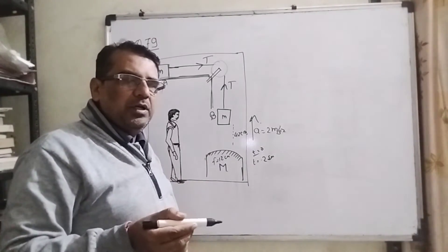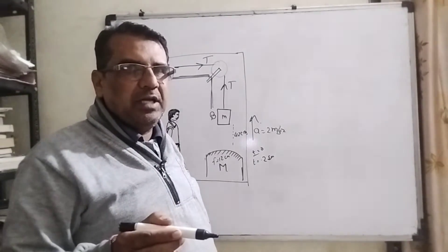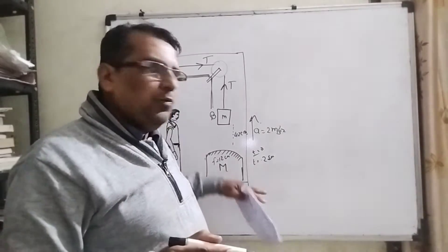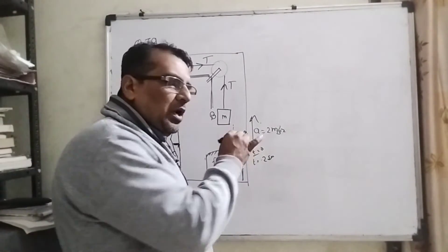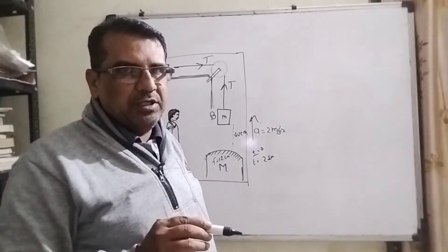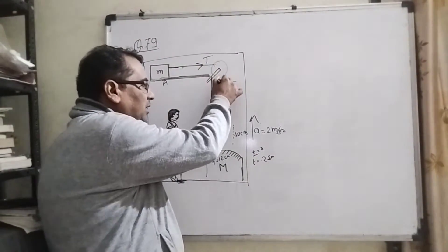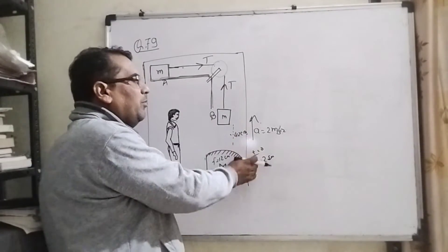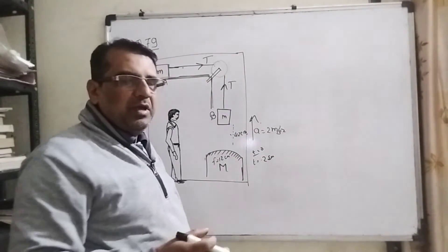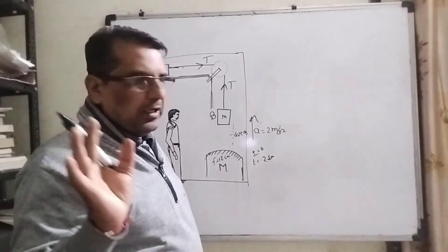जैसे आप लोगोंने मेरी पिछली वीडियो देखे होंगे जिसमें मैंने pseudo acceleration के बारे में बताया था. Pseudo acceleration का मतलब है कि जब कोई moving object में दूसरा कोई object रखा जाता है, तो उस पर pseudo acceleration लगता है. यहां body ऊपर की तरफ जा रही है, तो इसमें g के साथ additional acceleration लगेगा जिसे हम pseudo acceleration कहेंगे.